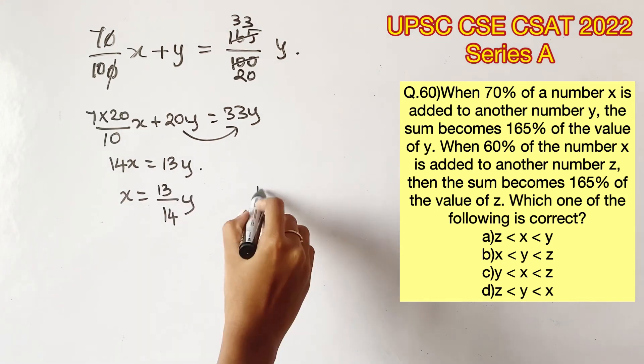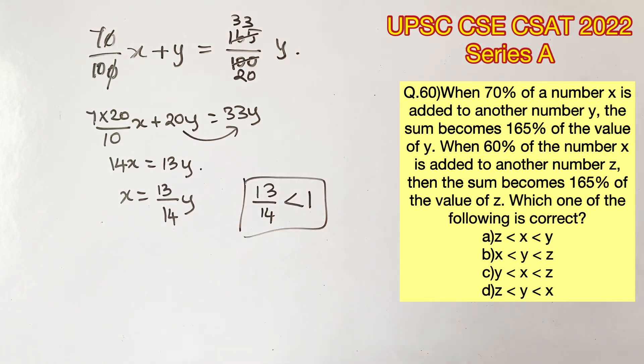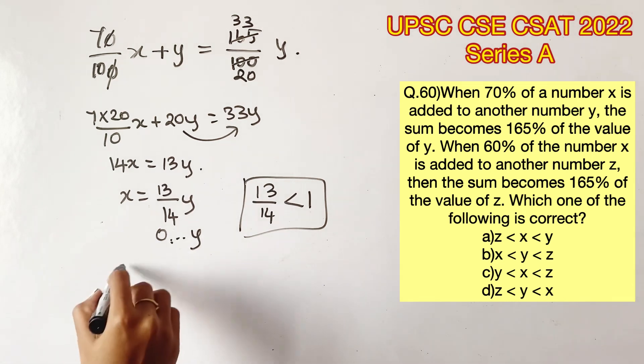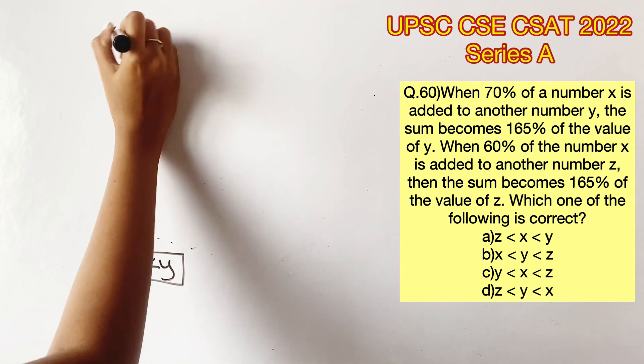We know that 13 by 14 is less than 1. So now x will be 0 point something y. When you multiply something lesser than 1, the value is going to decrease, right? So with this, we can conclude that x is lesser than y.